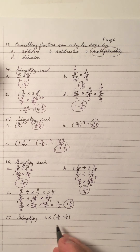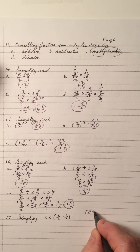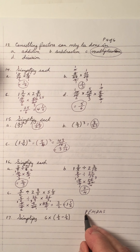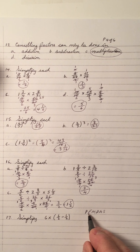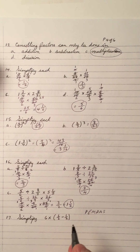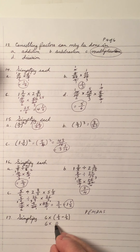Number 17, simplify using order of operations — PEMDAS. Brackets first, then exponents, then multiplication and division left to right, then addition and subtraction. Inside the bracket: a half subtract a half is 0. Now multiply: 6 times 0 is 0. That's the answer.